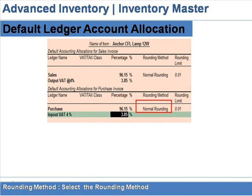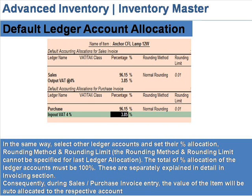At 'Rounding Method,' select the rounding method. At 'Rounding Limit,' enter the rounding limit. In the same way, select other ledger accounts and set their percentage allocation, rounding method, and rounding limit. Note that the rounding method and rounding limit cannot be specified for the last ledger allocation. The total percentage allocation of all ledger accounts must be 100.